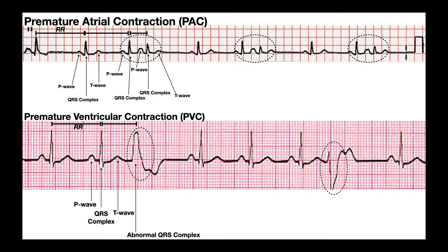Welcome back to Anatomy and Physiology on Catalyst University. My name is Kevin Tokoff. In this video, we're going to be discussing two more EKG patterns that are very similar, but they have a very important difference: where the electrical signal arises from. Those are premature atrial contraction, or PAC, and premature ventricular contraction, or PVC.